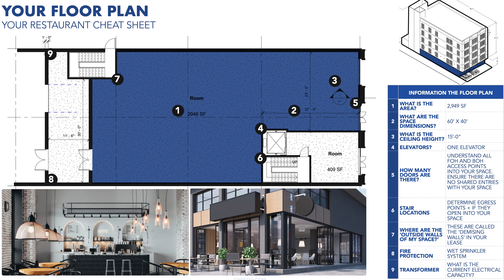Now let's talk utilities, focusing on your electrical panel. It's essential to understand the capacity of the existing electrical panel in your space — in other words, how much power you have available. We'll need to assess whether the electrical capacity meets the requirements for your kitchen equipment, lighting, and appliances. If the space has insufficient capacity, you can demonstrate to the landlord that upgrades are necessary, and they'll typically cover the cost of those upgrades. We'll go deeper into this process in the next class.